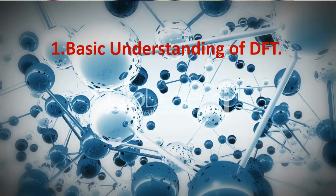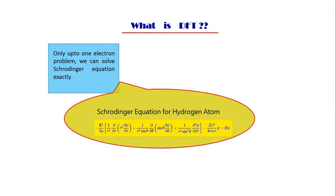So at first, the basic understanding of DFT. What is DFT? See, after one electron problems we can solve the Schrödinger equation exactly. You can see the Schrödinger equation of hydrogen atom here. Now see, there are two points: in any atom other than hydrogen there are many electrons, and in any practical system you are working, there are thousands and millions of atoms and molecules, so you cannot solve it exactly.